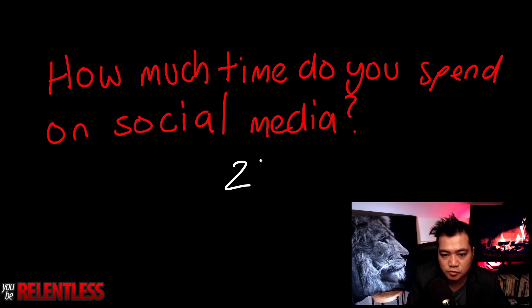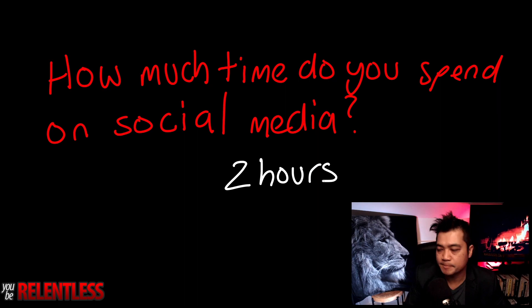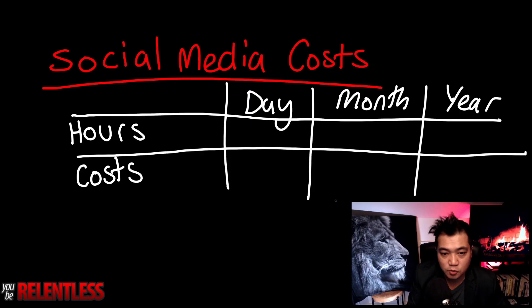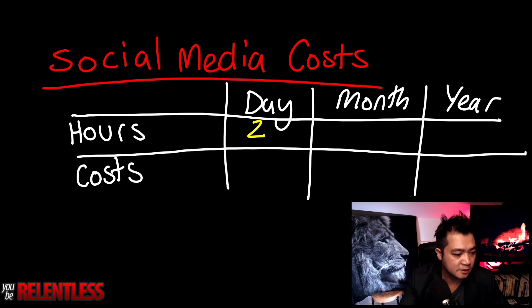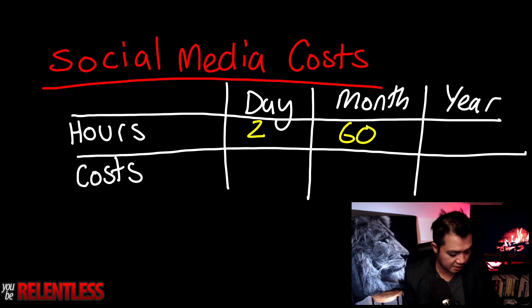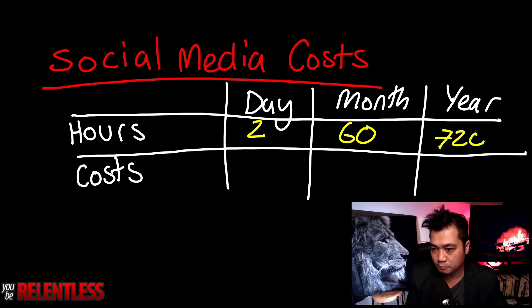So that's two hours per day. We want to calculate how many hours we're spending per day, per month, per year on social media. Two hours per day times 30 equals 60 hours per month. 60 hours per month times 12 equals 720 hours per year. So two hours per day equals 60 hours per month equals 720 hours per year.